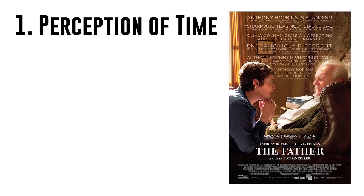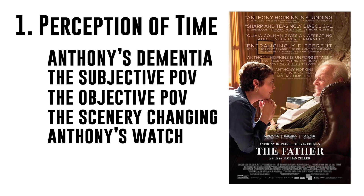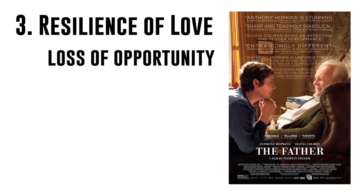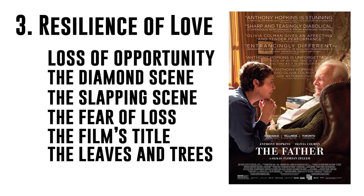To break it down, we're going to use three themes. One: perception of time, where we'll discuss Anthony's dementia, the subjective point of view, the objective point of view, the scenery changing, Anthony's watch, and Anthony's skipping CD player. Two: parental approval, where we'll discuss adult child psychology, Anthony's comments about Anne, and the pillow strangling scene. And three: resilience of love, where we'll discuss loss of opportunity, the diamond scene, the slapping scene, the fear of loss, the film's title, and the leaves and the trees at the end of the film — and much more.